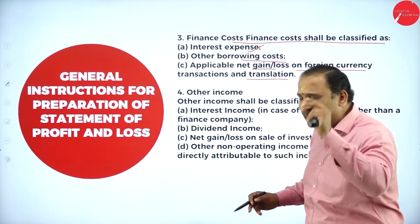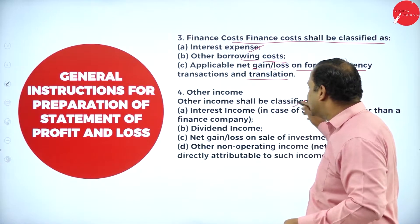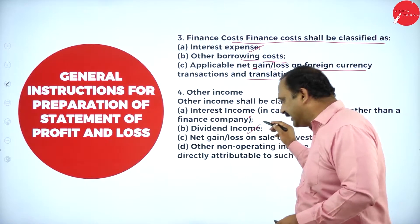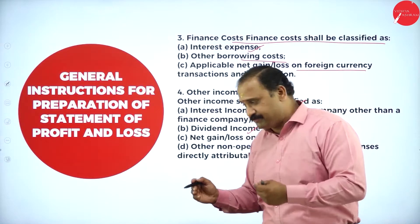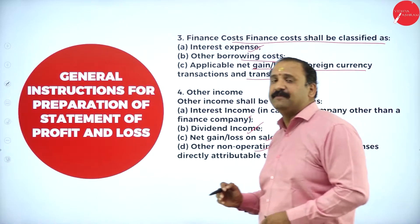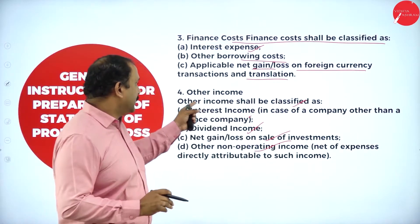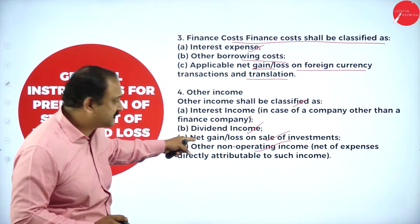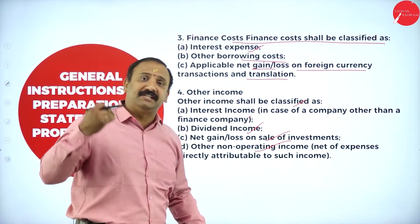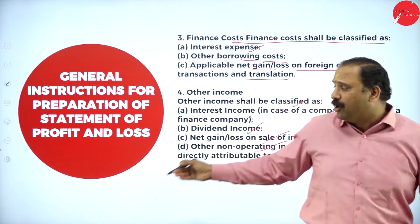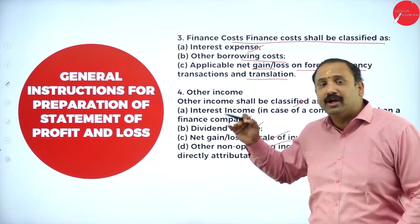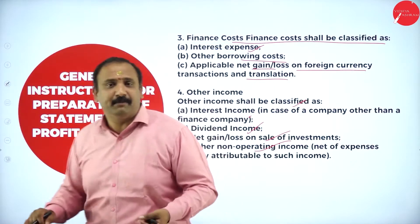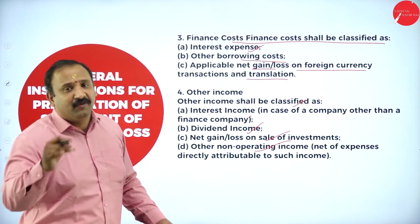Other income shall be classified as net interest income in the case of a company other than a finance company. This includes dividend income, net gain or loss on sale of investments — where selling a product or making a gain is automatically counted here — followed by other non-operating income which is directly attributable to such income, as these are very important factors from an income standpoint.